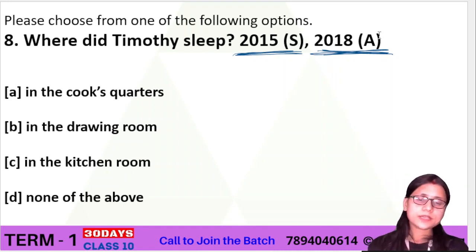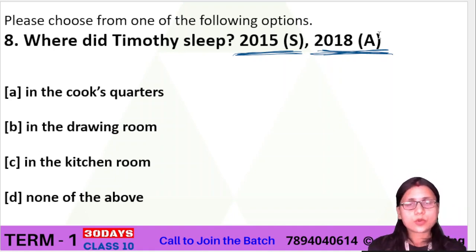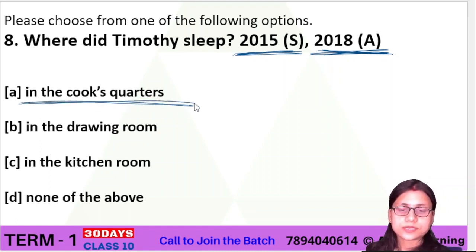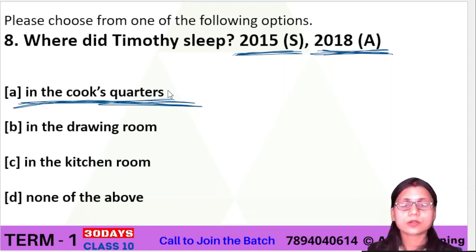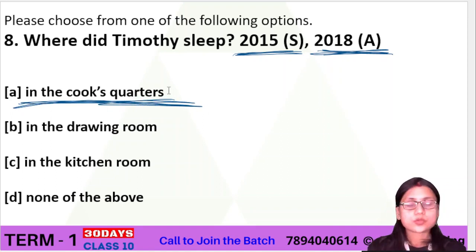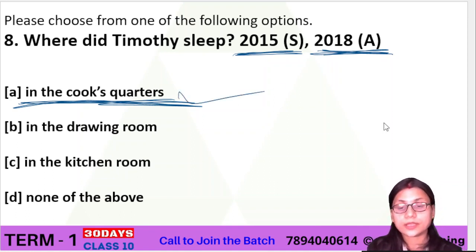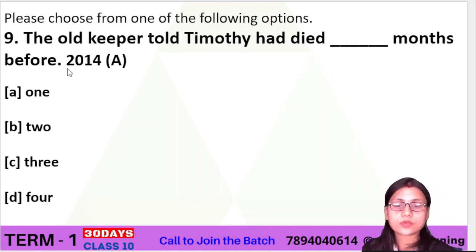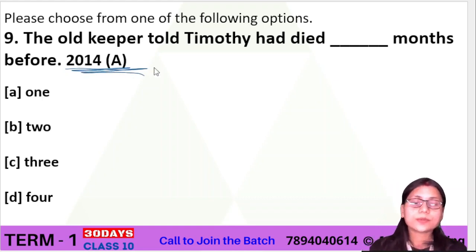So the question was: where did Timothy sleep? The four options are: in the cook's quarter, in the drawing room, in the kitchen room, none of the above. The answer is option A — in the cook's quarter. The old keeper told that Timothy had died just months before.